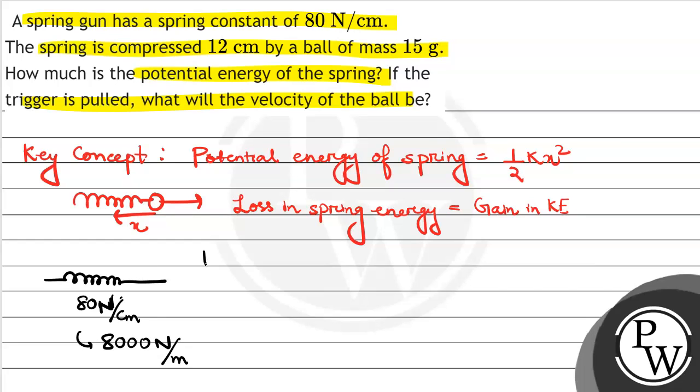The potential energy of the spring: it is compressed x equals 12 centimeters equals 0.12 meters. So we have half into 8000 into 0.12 whole squared. This is our potential energy.